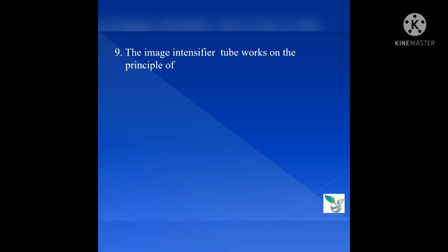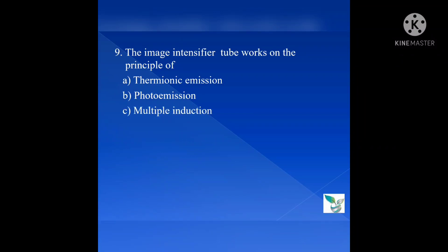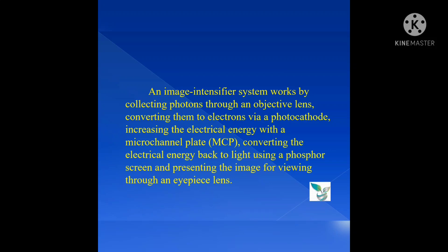Question number 9: The image intensifier tube works on the principle of — Option A: thermionic emission; Option B: photoemission; Option C: multiple induction; Option D: none of the above. The answer is Option B, photoemission. An image intensifier system works by collecting photons through an objective lens, converting them to electrons via a photocathode, increasing the electrical energy with a micro channel plate, converting the electrical energy back to light using a phosphor screen, and presenting the image for viewing through an eyepiece lens.